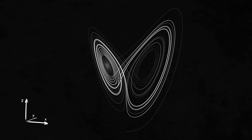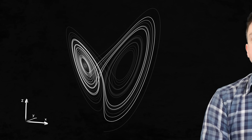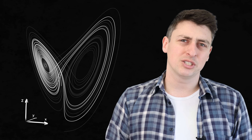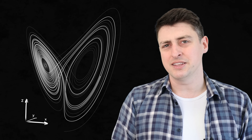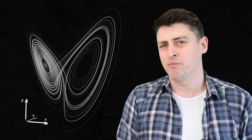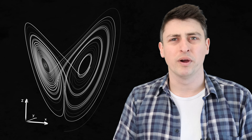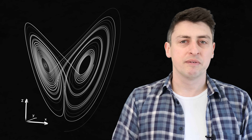Which then forces the circulation to flip in the opposite direction. If you run the simulation long enough, you see that there are two states that the atmosphere kind of wants to be in, but just can't quite reach.